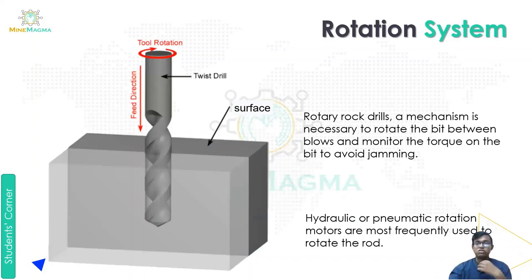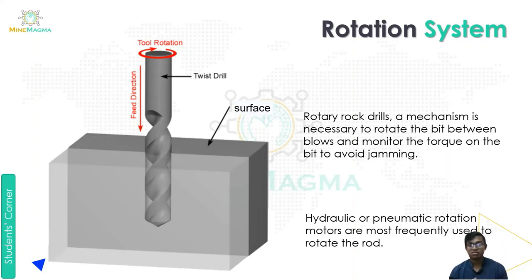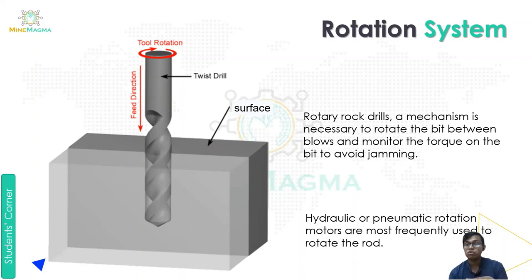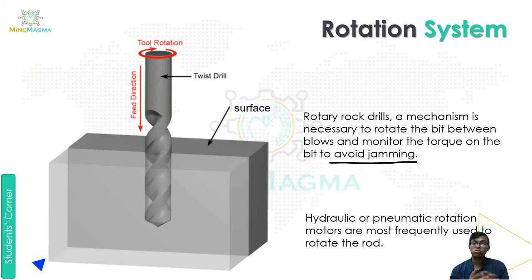Next is the rotation system. A rotary rock drill is a mechanism necessary to rotate the bit between blows and monitor the torque on the bit to avoid jamming. As shown in the diagram, the drill rotates in the feed direction, and torque is monitored to prevent jamming.